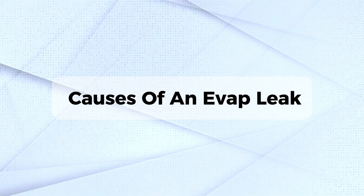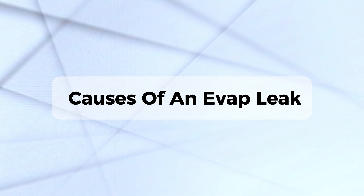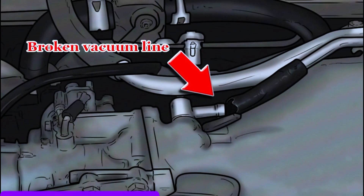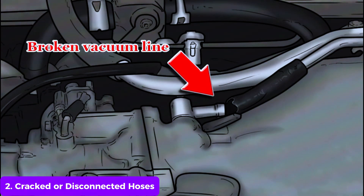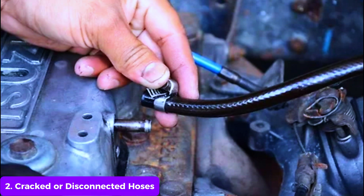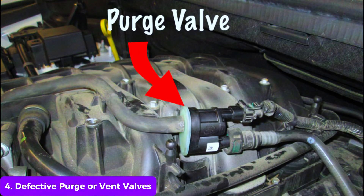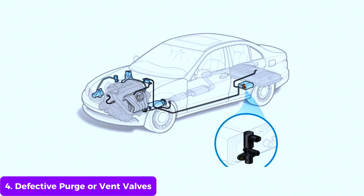Now let's talk about what can cause an evap leak. Loose or damaged gas cap — this is the most common cause; if the gas cap is loose, cracked, or missing, it can cause an evap leak. Cracked or disconnected hoses: the hoses in the evap system can crack over time or become disconnected, allowing vapors to escape. Faulty evap canister: the canister can develop cracks or get damaged, leading to leaks. Defective purge or vent valves: these valves control the flow of vapors and can fail, causing leaks.